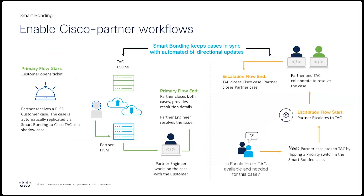Best case scenario, you're able to resolve the issue and close the case. But in the event that you need to contact Cisco for support, with Smart Bonding it's very easy to click a button or call Cisco TAC to escalate the shadow case. A Cisco TAC engineer is then assigned and will work through resolution until the case can be closed.